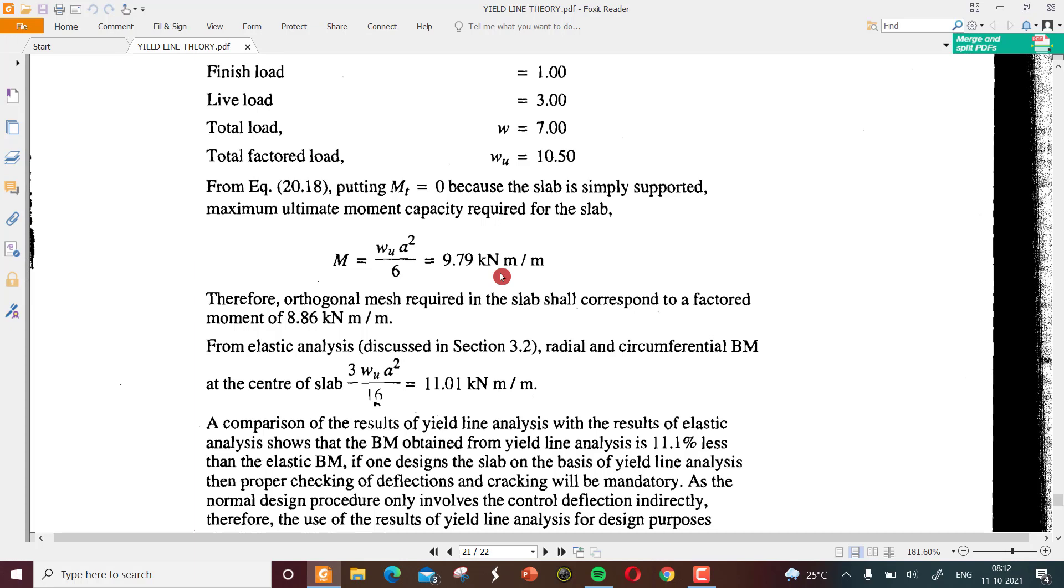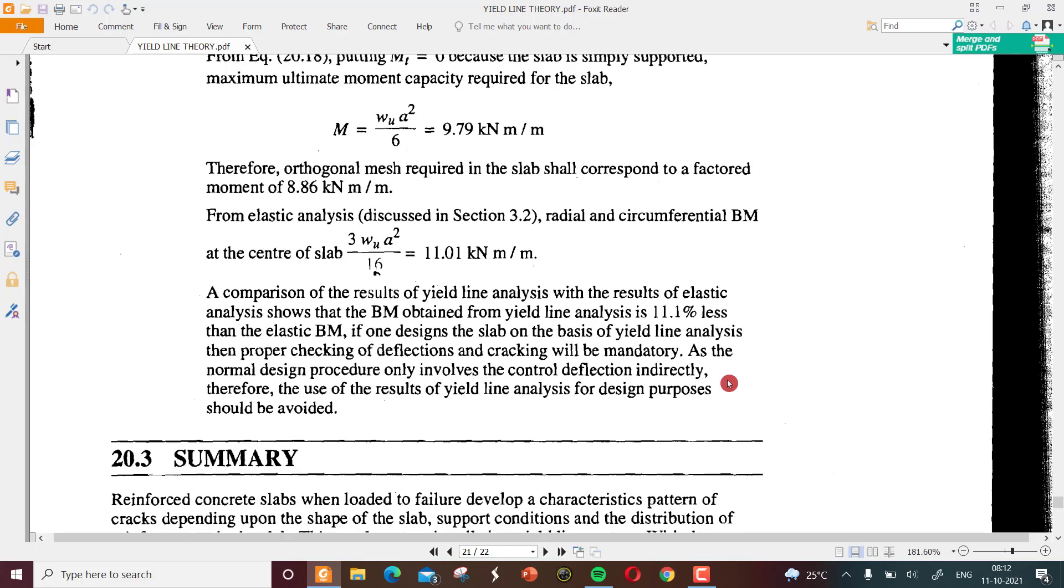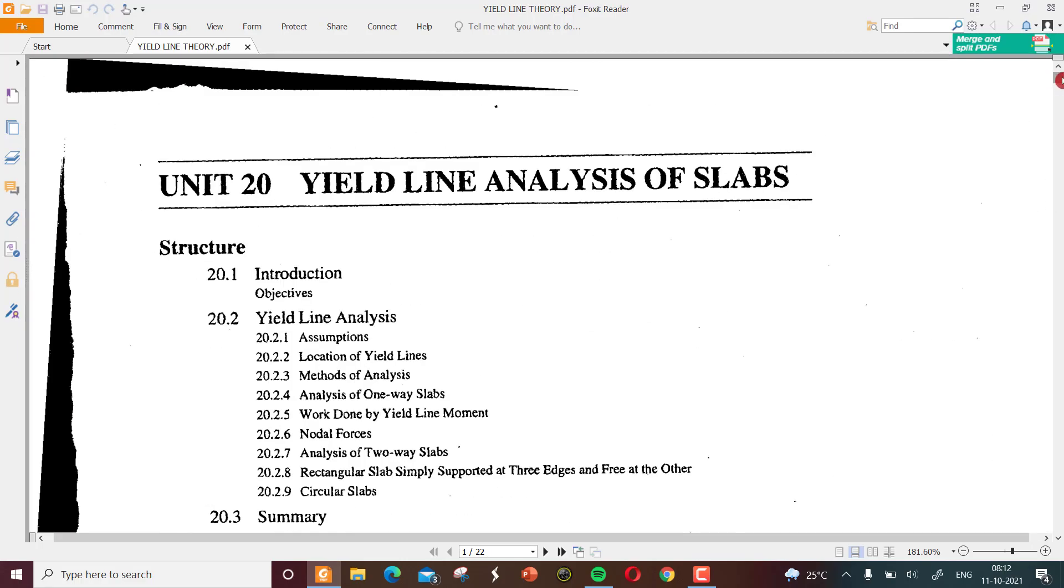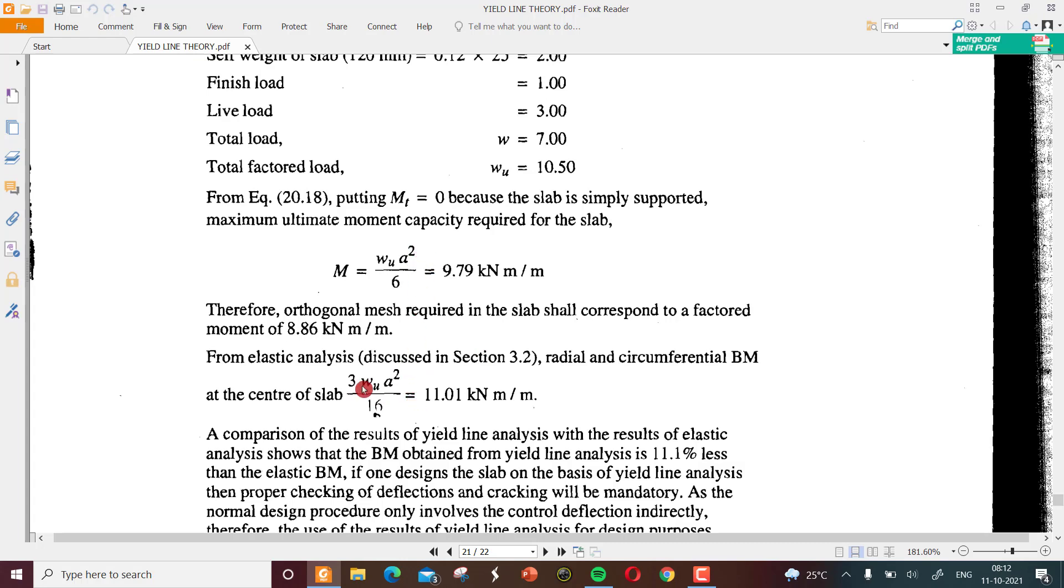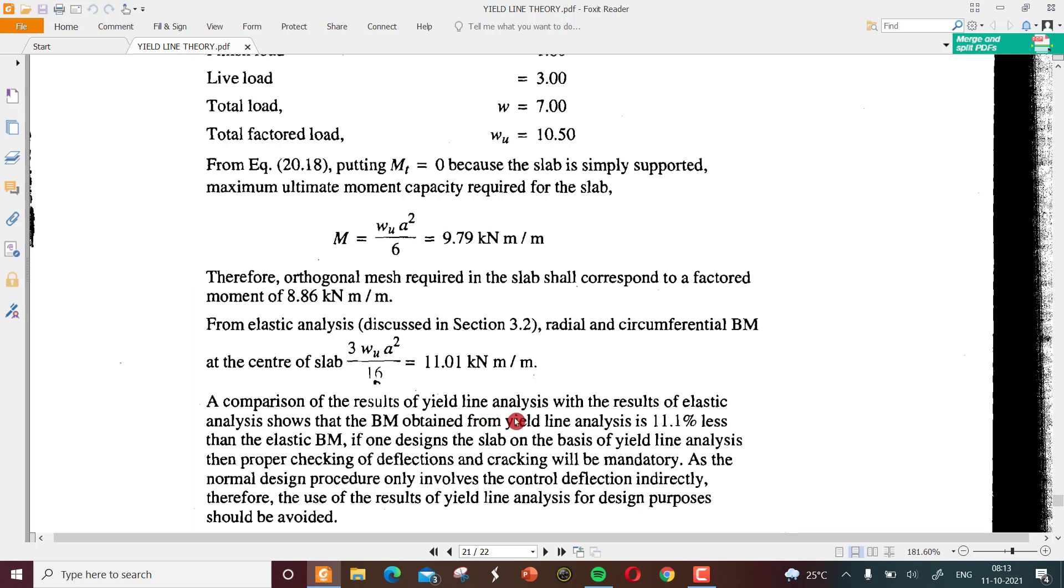Therefore, the orthogonal mesh required in the slab corresponds to a factored moment of 9.86 kN-meter per meter. From elastic analysis discussed in section 3.2, the radial and circumferential bending moment at the center of the slab is given by 3w times r squared by 16, which equals 11.01 kN-meter per meter. This is actually a check on the obtained value.